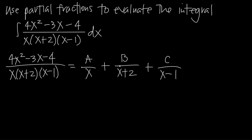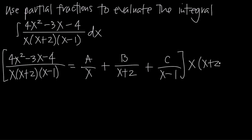This right hand side is what we're going to use to replace the original fraction, so we'll actually end up integrating this instead. All we have to do before that step is find values for A, B, and C. To do that, we're going to multiply both sides of this equation by the denominator from the left hand side: x times x plus 2 times x minus 1.